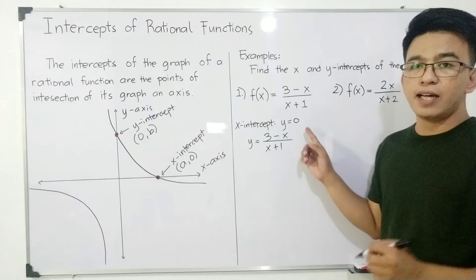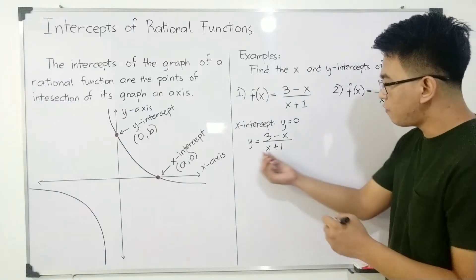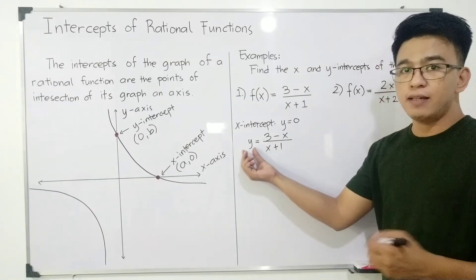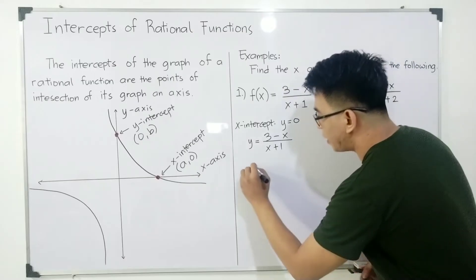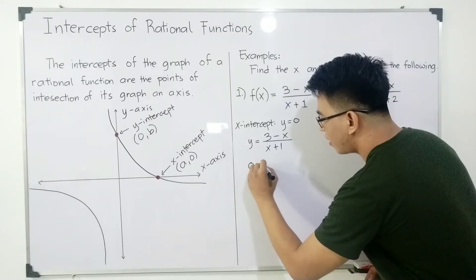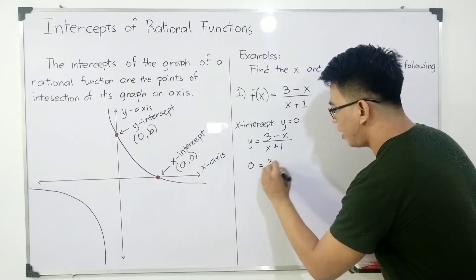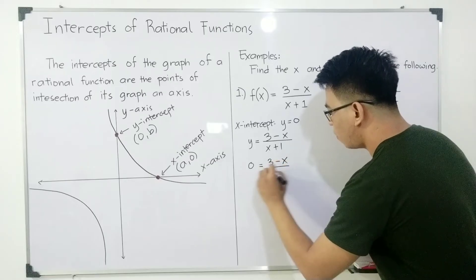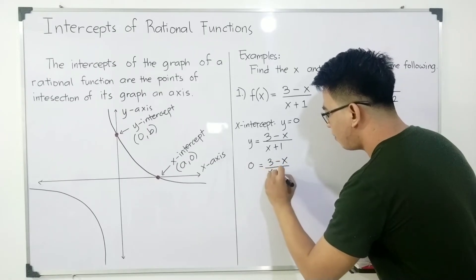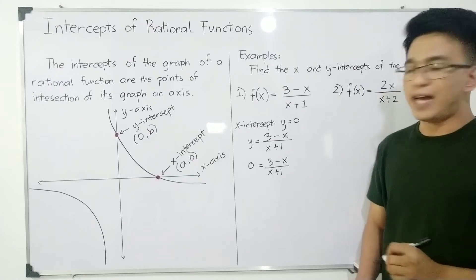Since we said earlier your y is equal to 0, therefore we can replace y as 0. So it will become 0 = (3-x)/(x+1). And then you will cross-multiply.